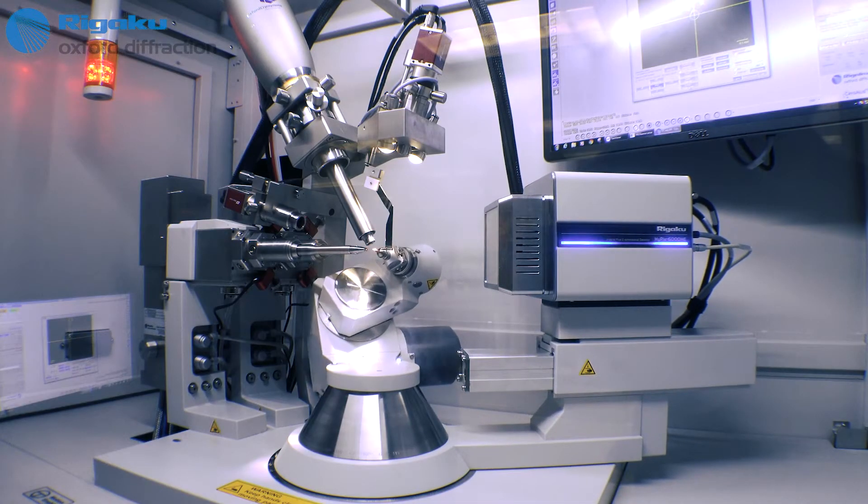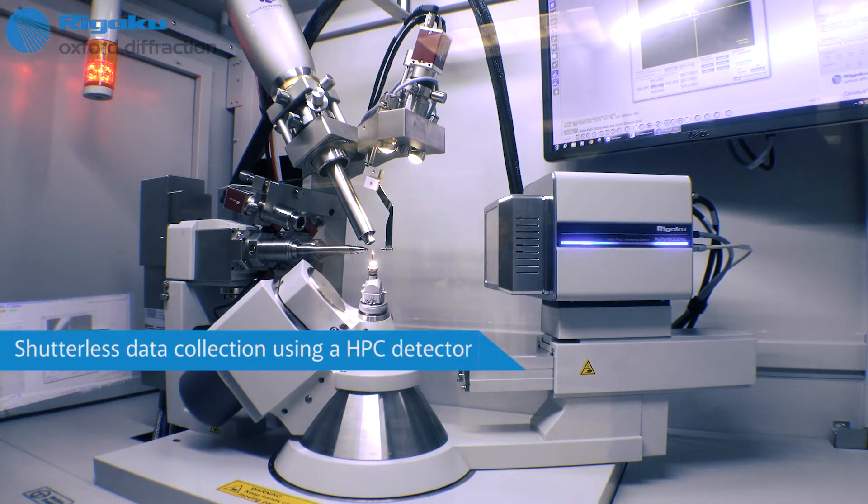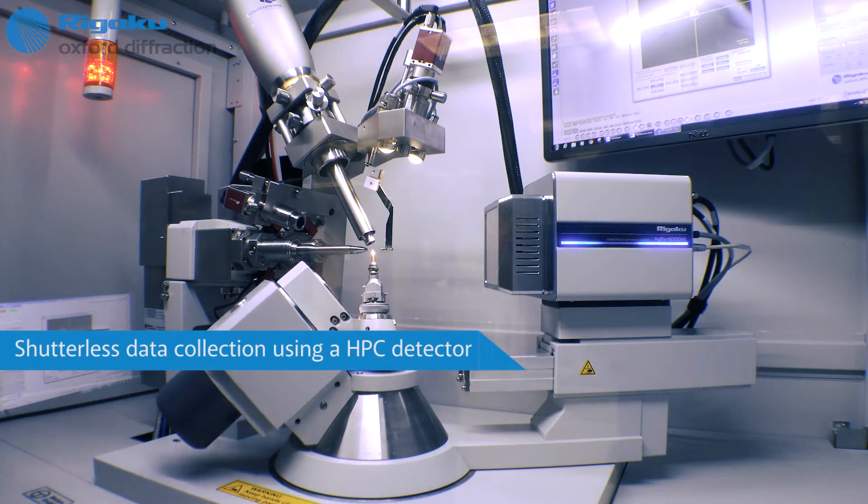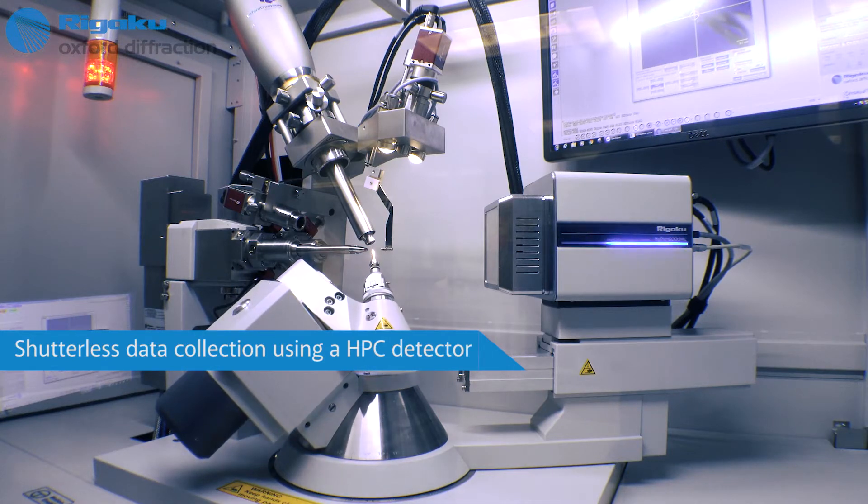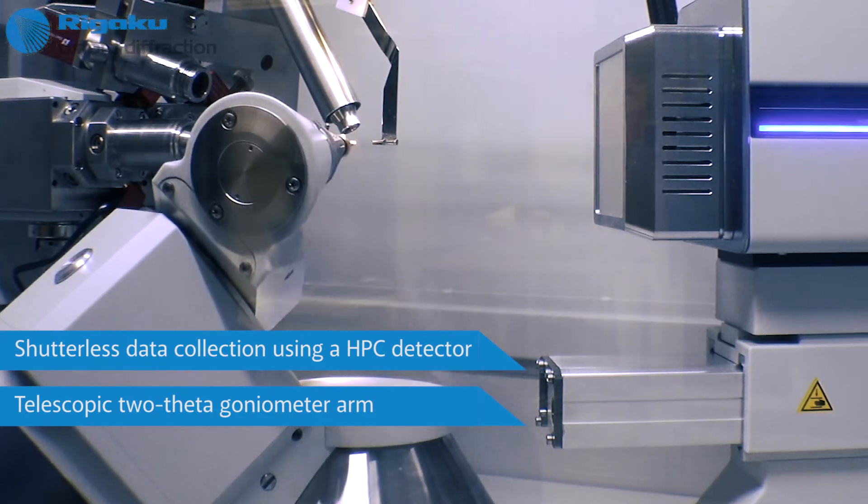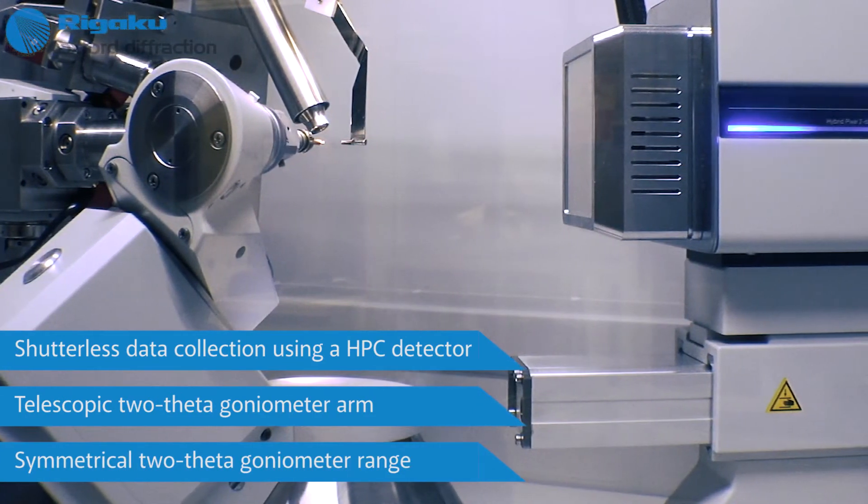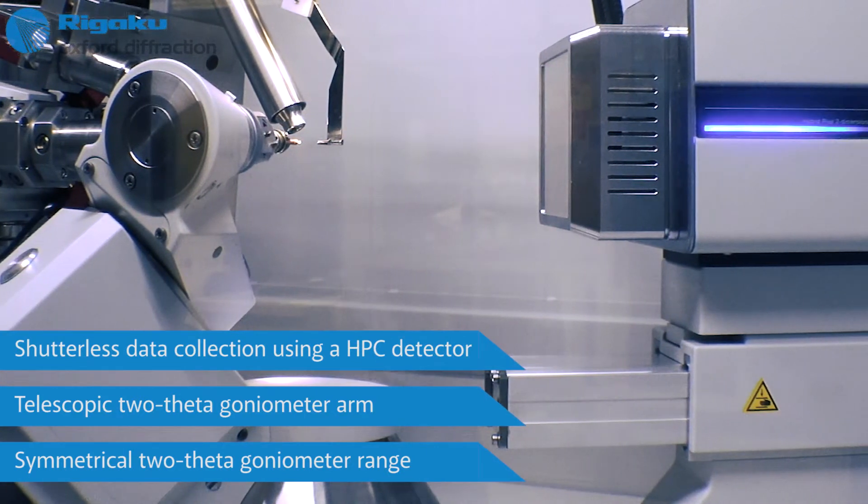Moving faster than ever, the new Precision Kappa Goniometer makes the most of shutterless data collections when using hybrid photon counting or HPC detectors. The telescopic theta arm provides a large distance range and a symmetrical theta range, so you can position your detector to suit your sample type.